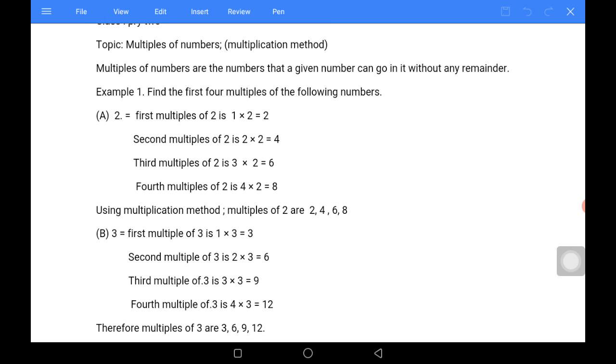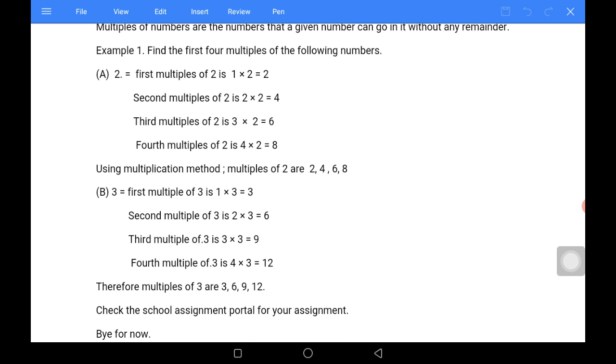As I said earlier on, multiples of numbers are the numbers that a given number can go in it without any remainder. Now, let us use this example number one to find our multiples of number using multiplication method. Find the first four multiples of the following numbers. A, number two is given to us. We are asked to find the multiples of number two.